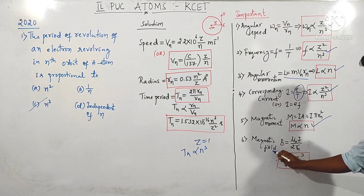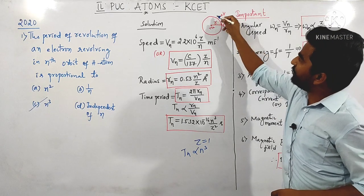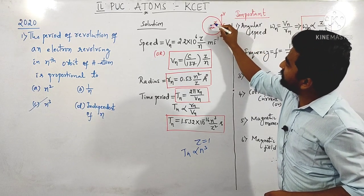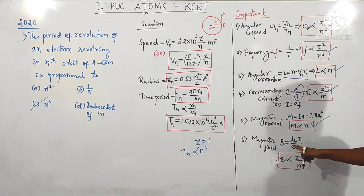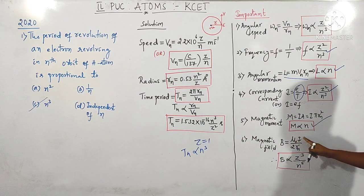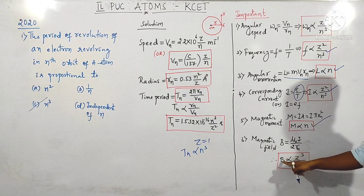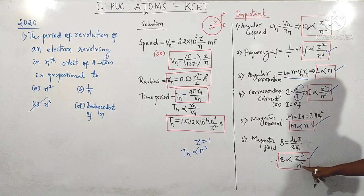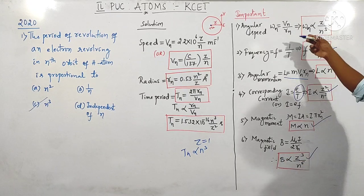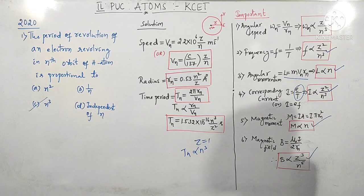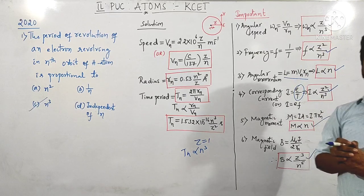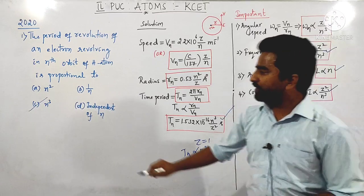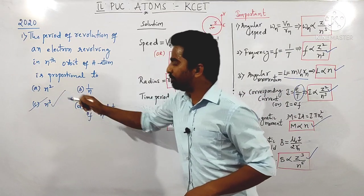Similarly, when an electron is revolving in a hydrogen atom, there is a magnetic field at the center. The magnetic field at the center is given by μ₀I/2R. So magnetic field is proportional to Z³/n⁵. These are all the terms asked in previous year JEE and NEET examinations. In this question, they asked the time period, so the time period is proportional to n³.